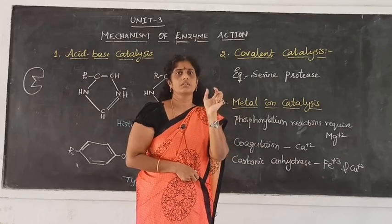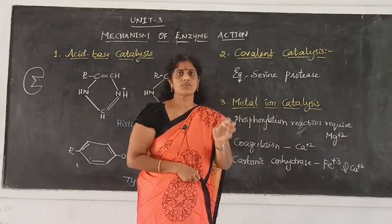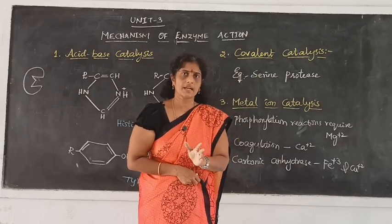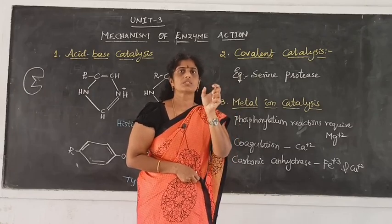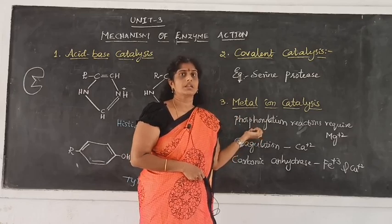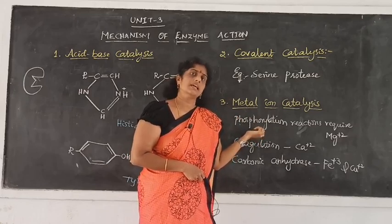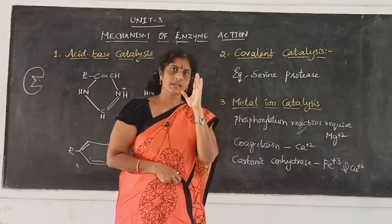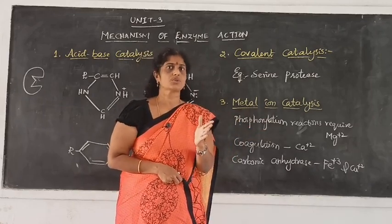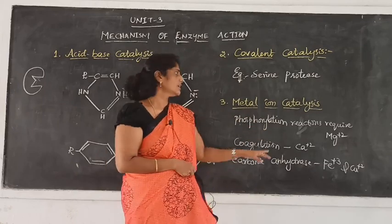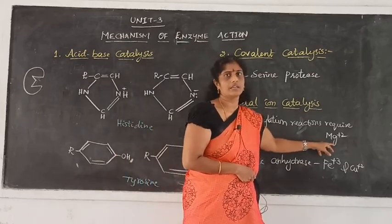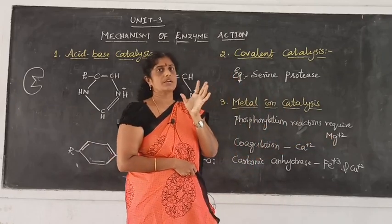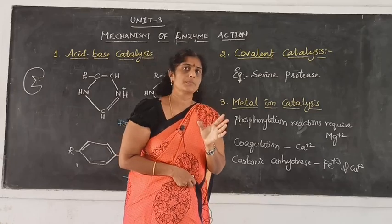Do you know ATP? Glucose is converted to glucose-6-phosphate. This process requires a co-enzyme ATP for phosphorylation to take place, and it also requires a co-factor metal ion, which is Mg2+.